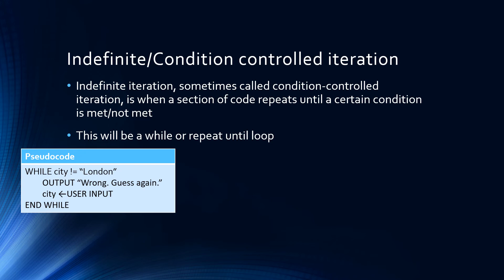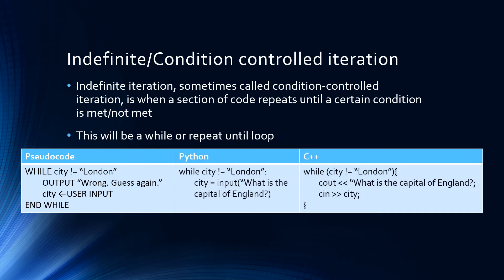It is essential when designing a while loop that there's the opportunity for the condition to eventually evaluate as false. This is achieved in this example by allowing the user to re-input the value that's stored in city. Without this, the algorithm would be stuck in what's called an infinite loop. Notice again that our pseudocode syntax does not precisely match the syntax of either Python, or C++, or any other language that you might choose to implement it in.